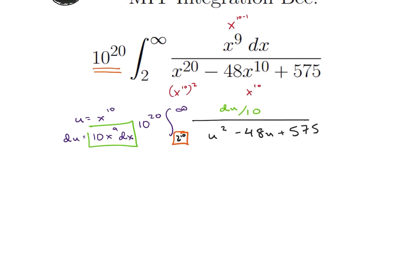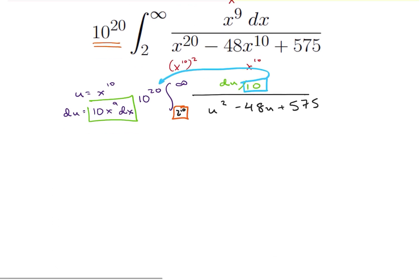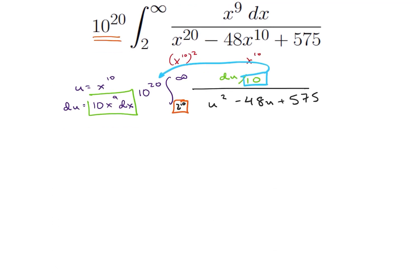Let's take that 10 we just introduced and move it to the outside, which makes this 10 to the 19th — that's 20 minus 1. So now we have 10 to the 19th times the integral from 2 to the 10th to infinity of du over u squared minus 48u plus 575.